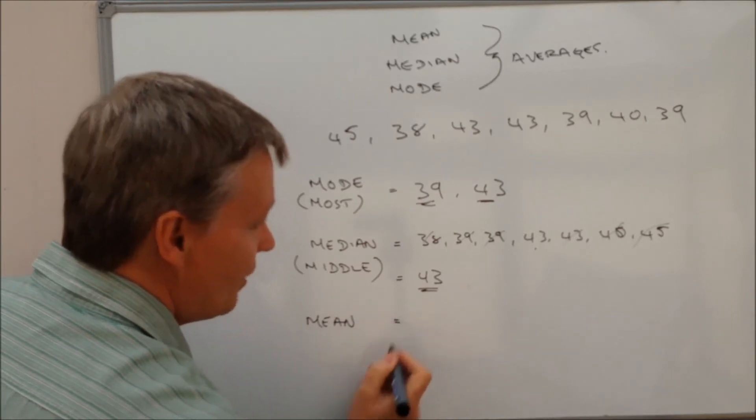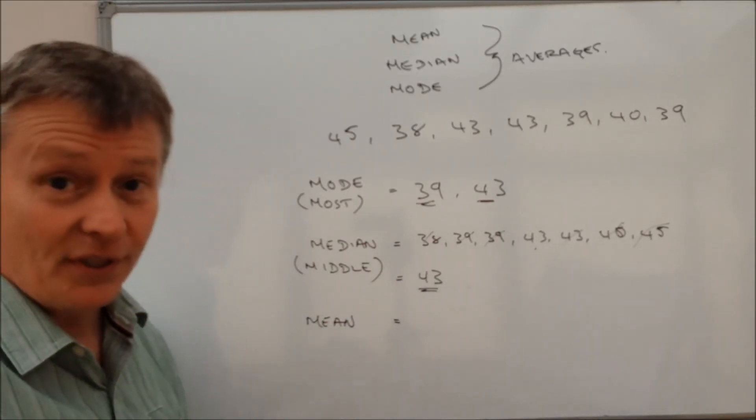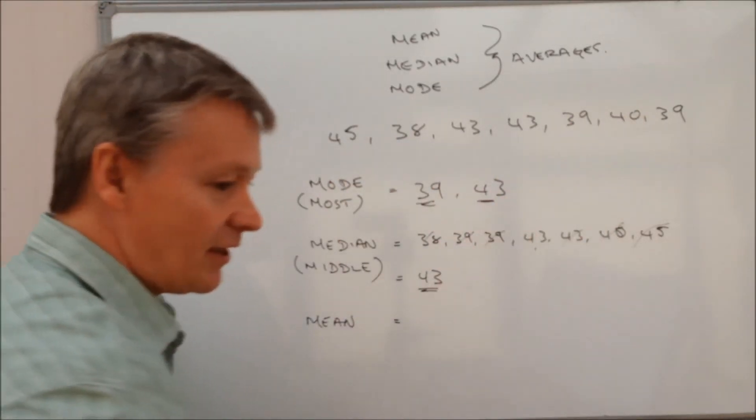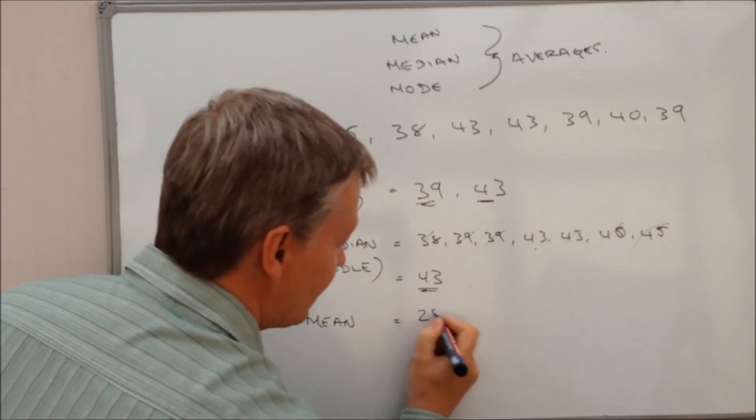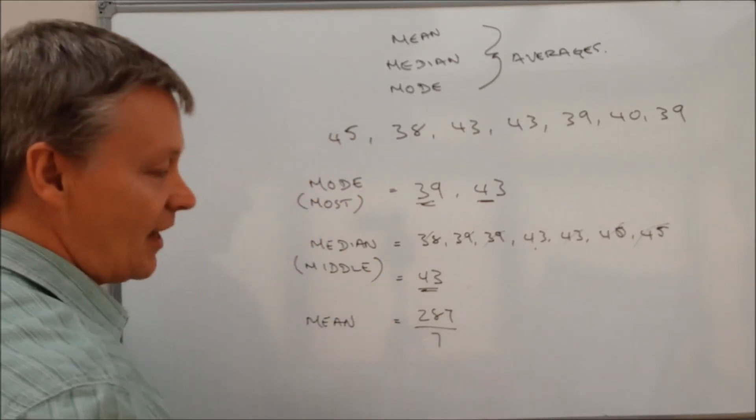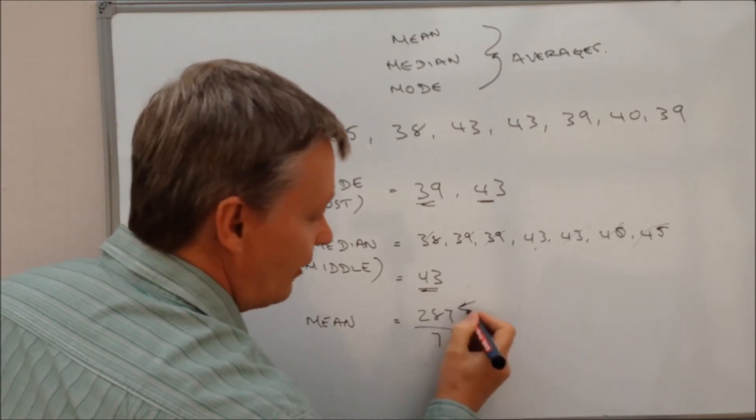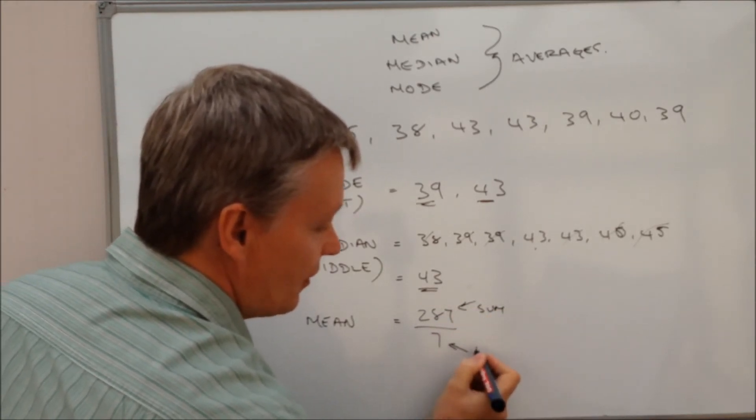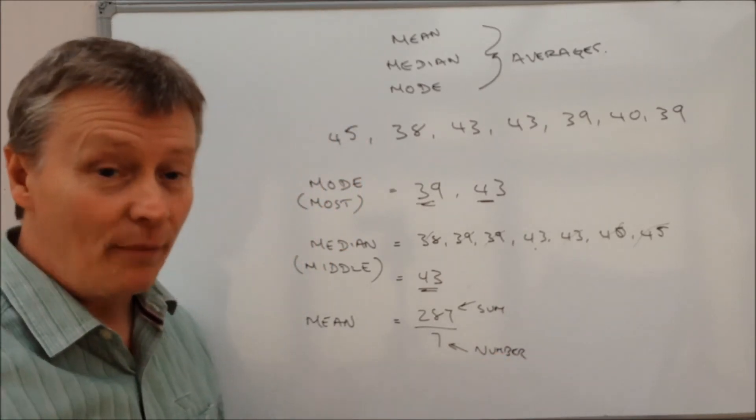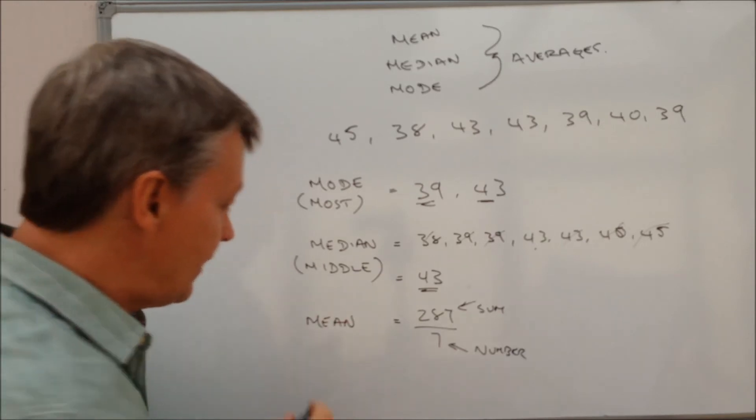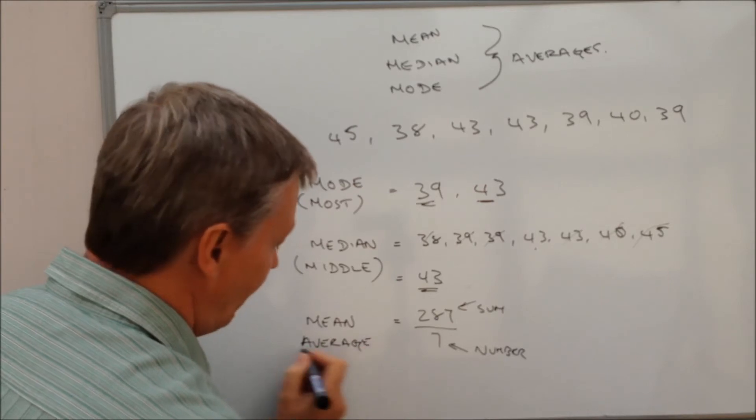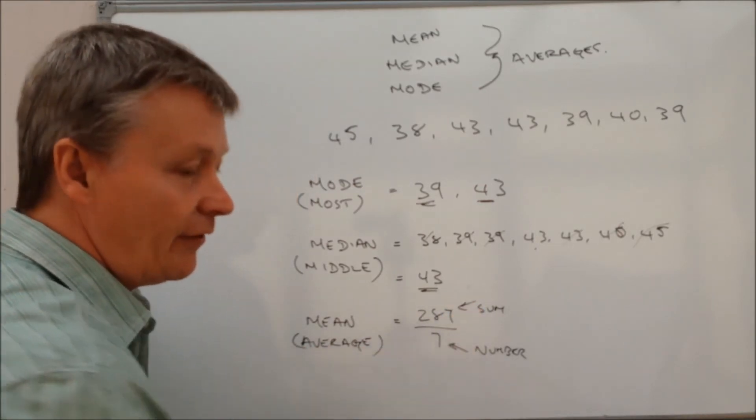And what we're going to do with the mean is we add all the numbers together. And if you add all of these numbers together, you get 287, and then the number of numbers is seven. So it's actually this bit here is the sum and this bit here is the number. And it's just again a very easy, simple way of remembering it, that the mean or the average is the sum divided by the number.